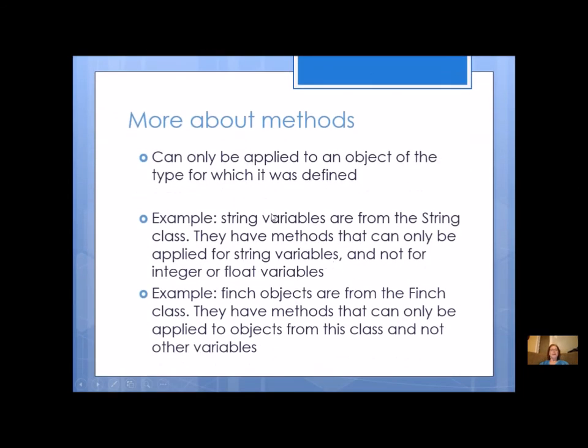More about methods. Methods can only be applied to an object of the type for which it is defined. For example, string variables are from a string class. They have methods that can only be applied for string variables and not for integer or float variables. Finch objects are from the Finch class. They have methods that can only be applied to objects from this class and not any other variables.